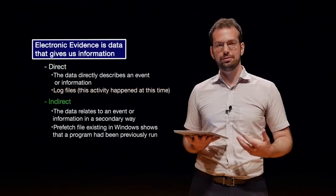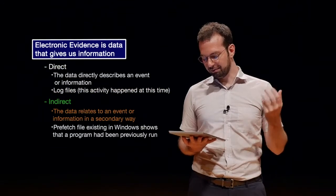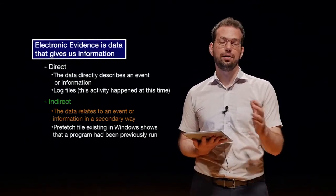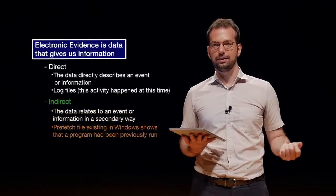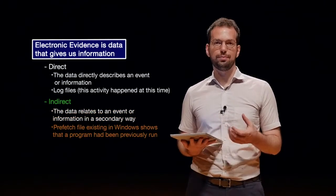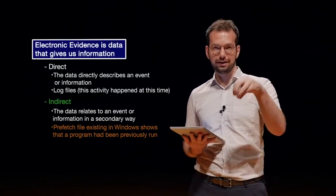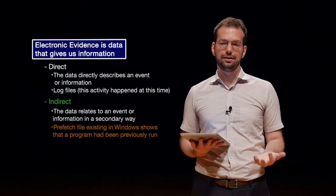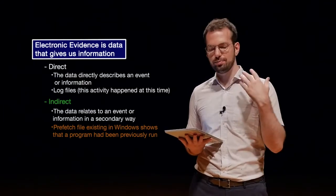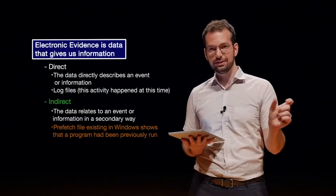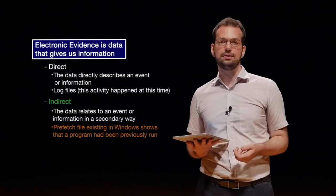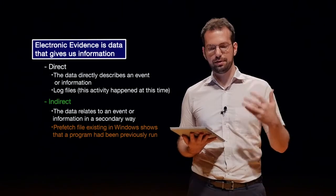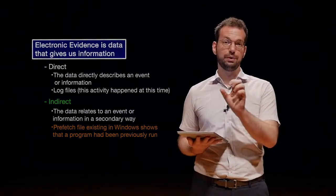Indirect evidence is where the data relates to an event or information in a secondary way. Normally what we're looking at are the effects of some cause. For example, a prefetch file that exists in Windows shows that a program had been previously run. If we just see that the file is there, we know the program has been run sometime in the past — we get this secondary information. Just observing it doesn't tell us the program was run explicitly, but we can infer it from the existence of that file. We should think about when we are inferring information versus when we are explicitly being told information.